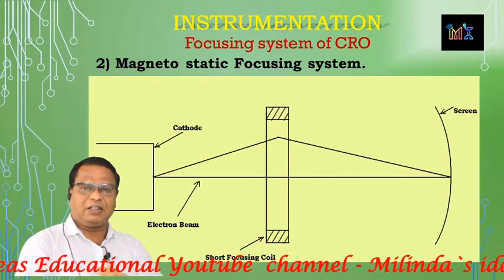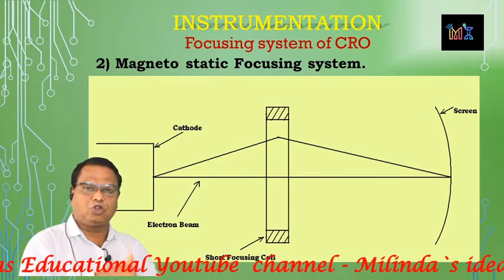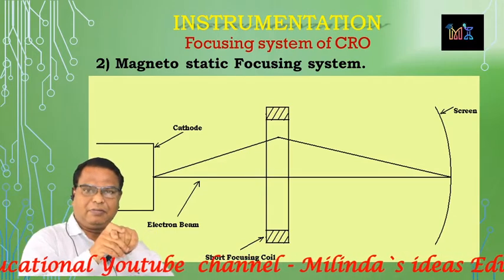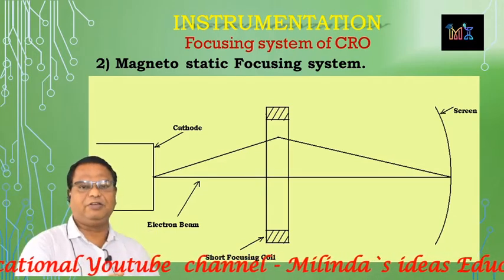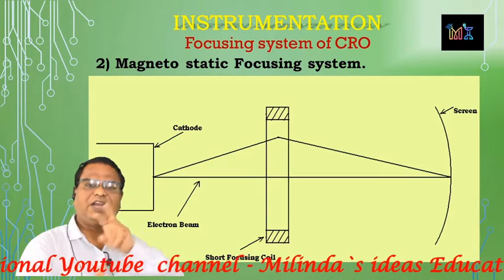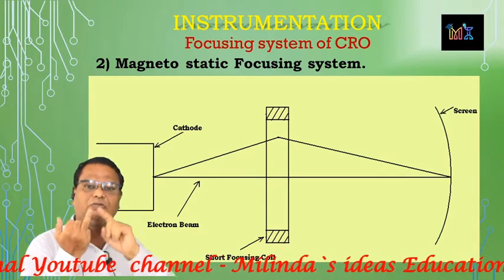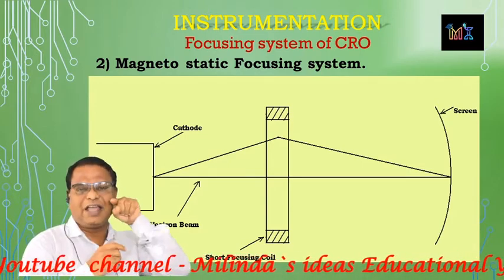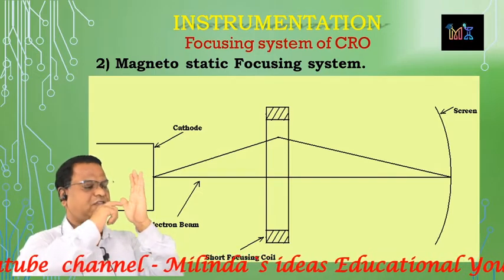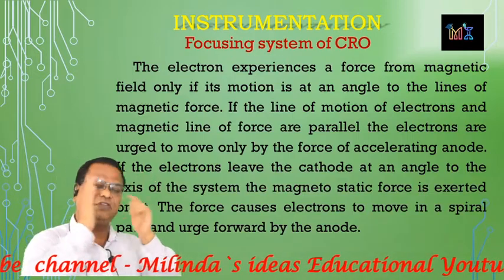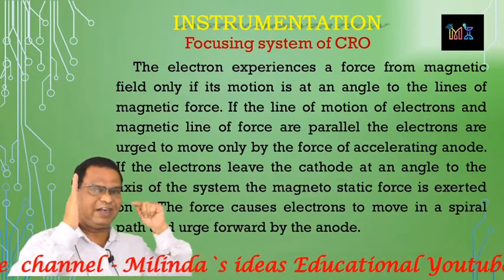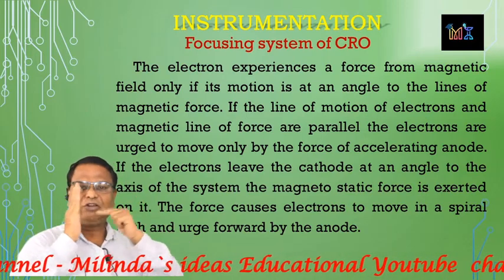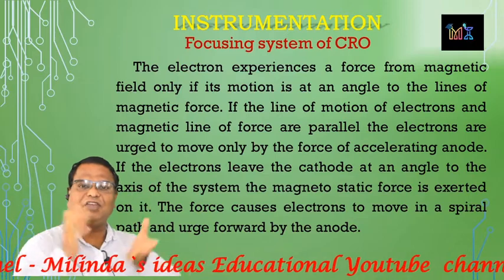There are three types of electrons in the electron beam. The first is the axial electron, the second is the para-axial electron, and the third is the non-paraxial electron. The axial electron will interact with the magnetic field and the magnetic flux lines.